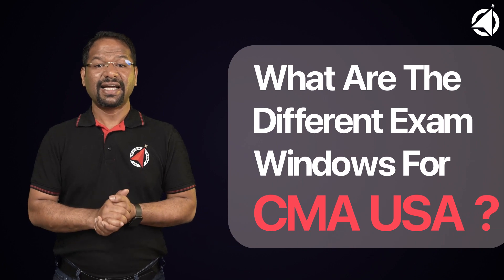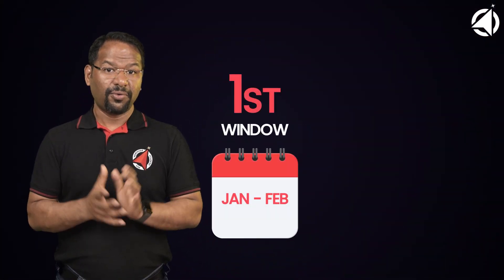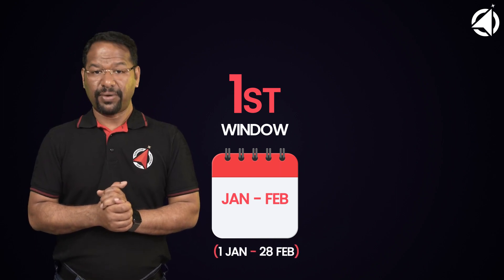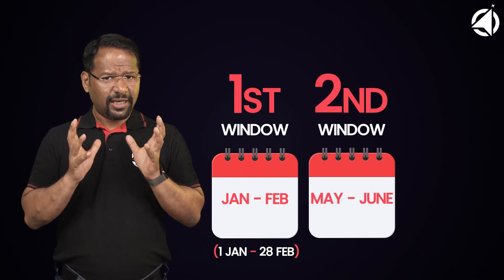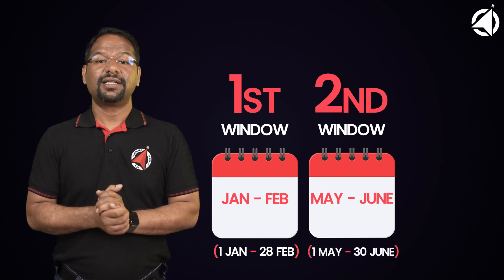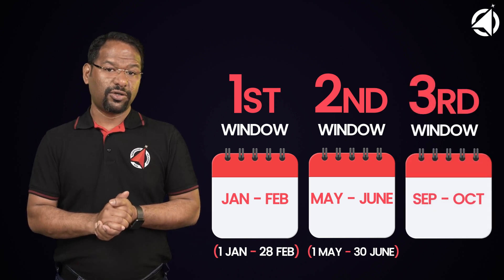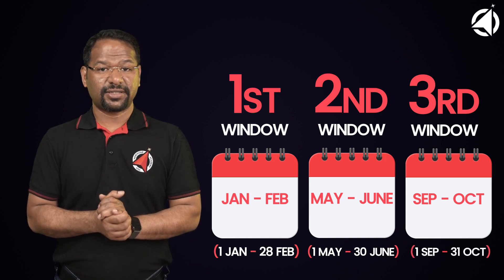What are the different exam windows for CMA USA? There are three exam windows in a year. The first is the January-February window, where exams are held from January 1st to February 28th. The second is the May-June window, from May 1st to June 30th. The third is the September-October window, from September 1st to October 31st.